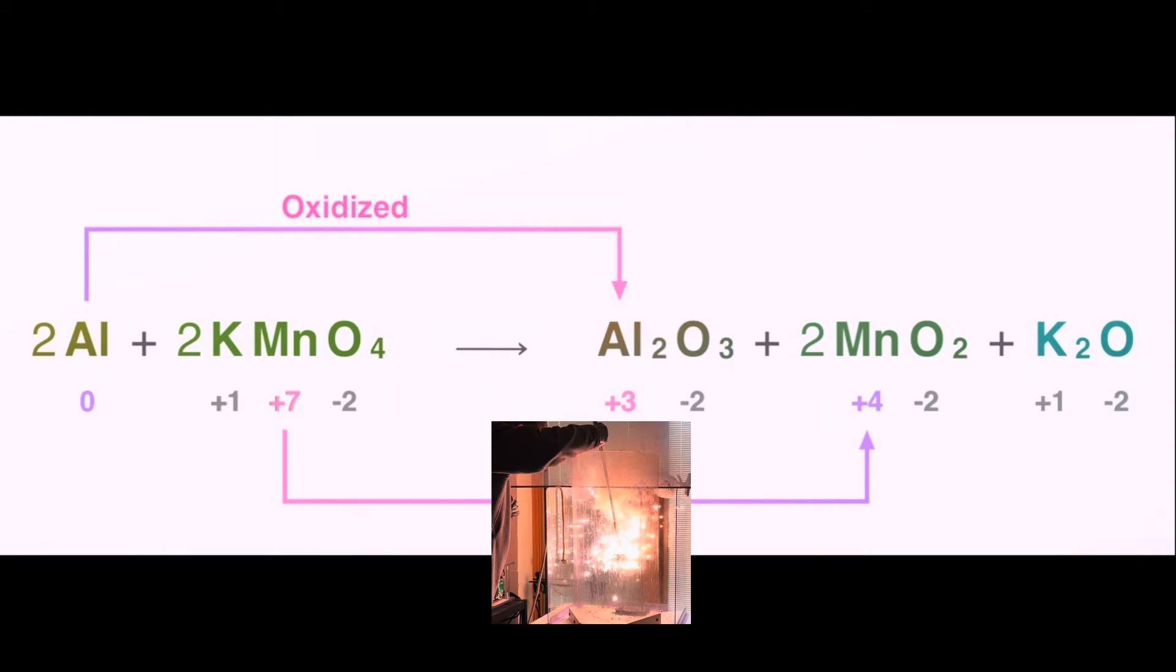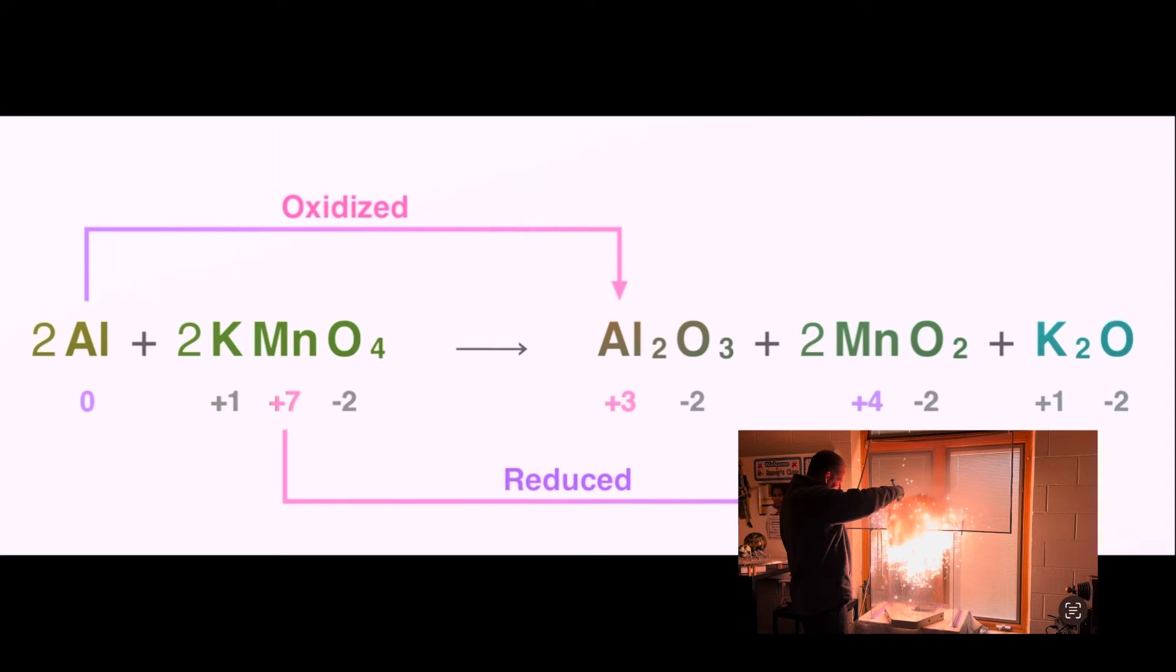we get the products aluminum oxide, that's Al2O3, two moles of manganese dioxide, that's 2MnO2, and potassium oxide, that's K2O.